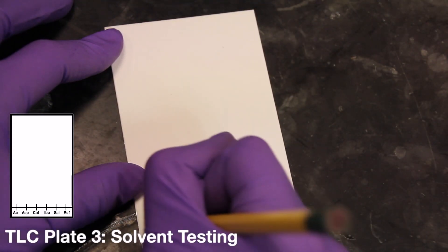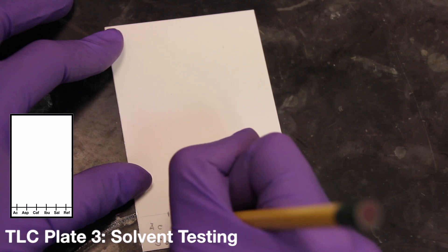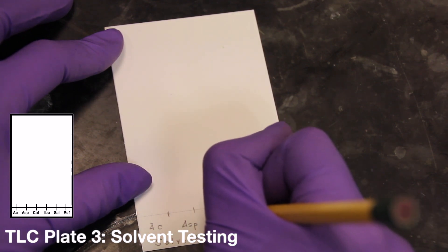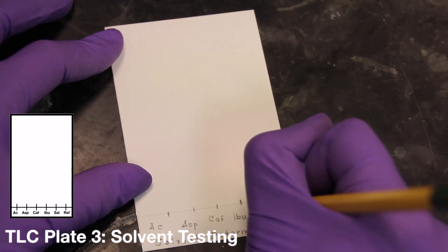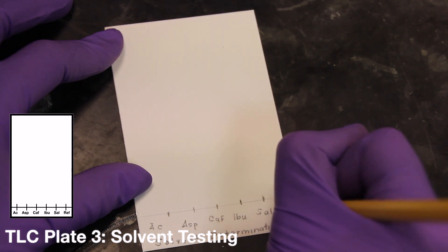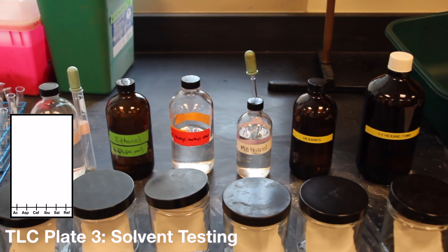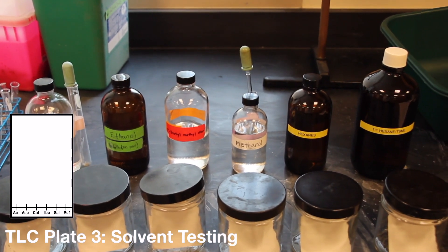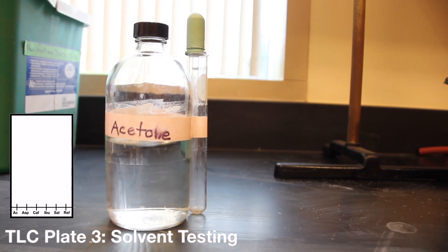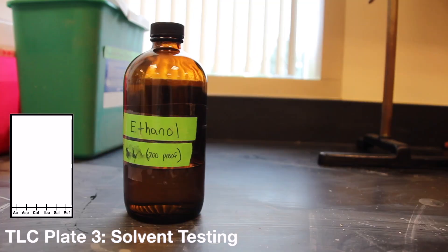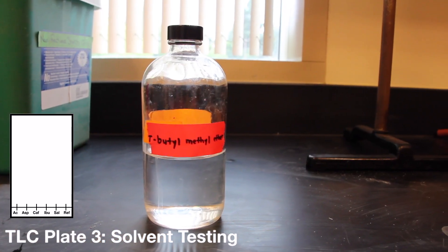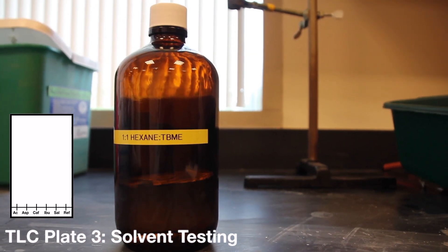Finally, the third TLC plate will be part of a group project whose aim is to compare TLC solvents. Each member of the group should spot a separate plate with 5 individual reference compounds as per plate 1. The group should test the following 6 solvents to see the effect of polarity on the TLC results: acetone, hexanes, methanol, ethanol, t-butyl methyl ether, and a hexanes t-butyl methyl ether mixture.